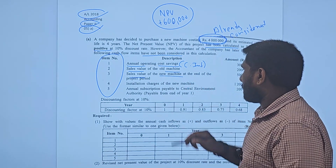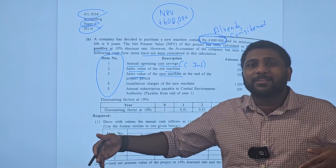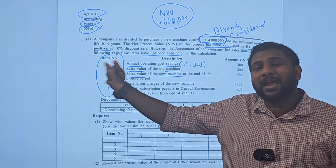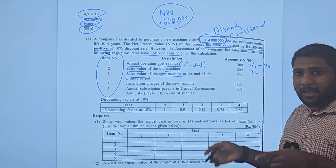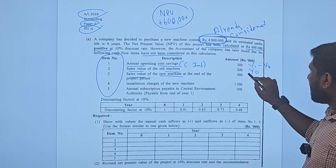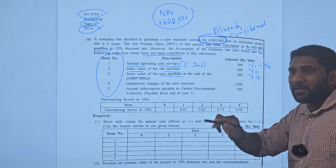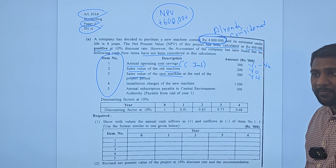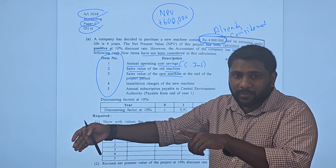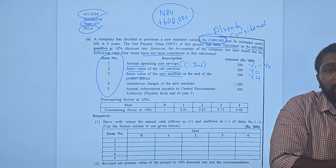Sale value of the new machine: I won't sell the new machine today. I will use it for 4 years, and after 4 years — at the end of Year 4 — I will sell the new machine and get 500,000. So this is a cash inflow which will happen in Year 4. If you are selling the old asset, it's a Year 0 inflow; if you are selling the new asset, it's an inflow in the last year of operation.